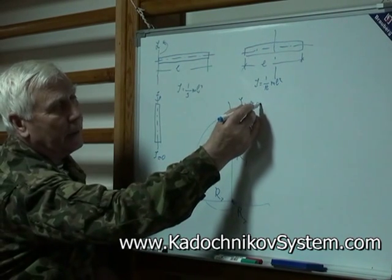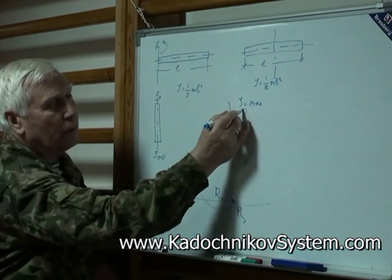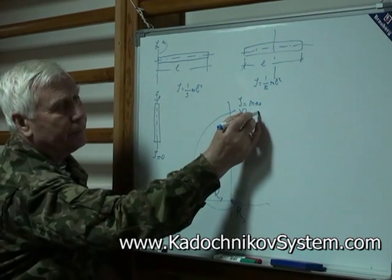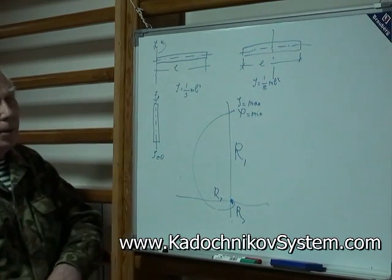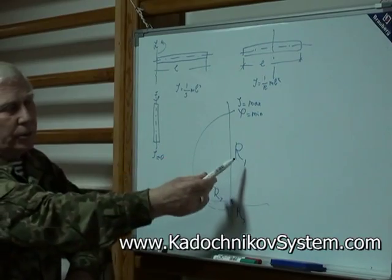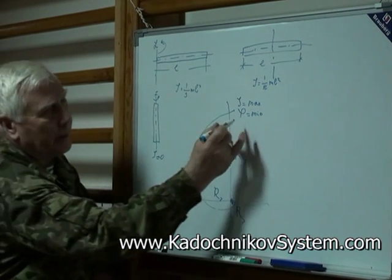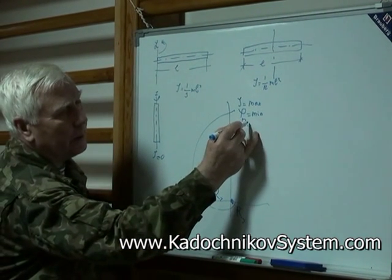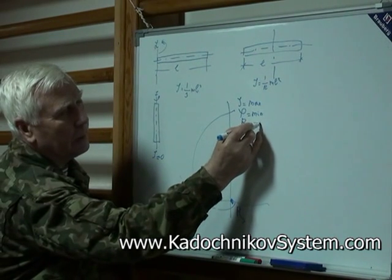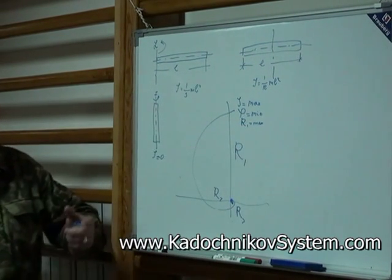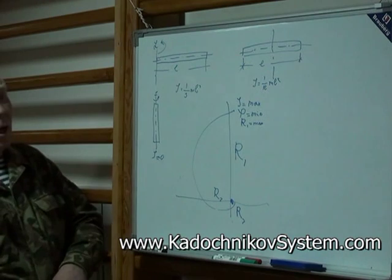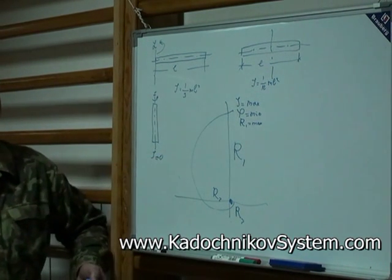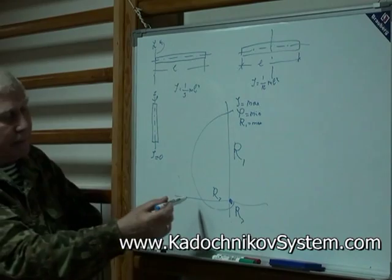What are we going to consider here? In this case, the moment of inertia is maximum. And the angular velocity? Minimum. The first radius is maximal — that is the result here. And the angular velocity? Minimum.